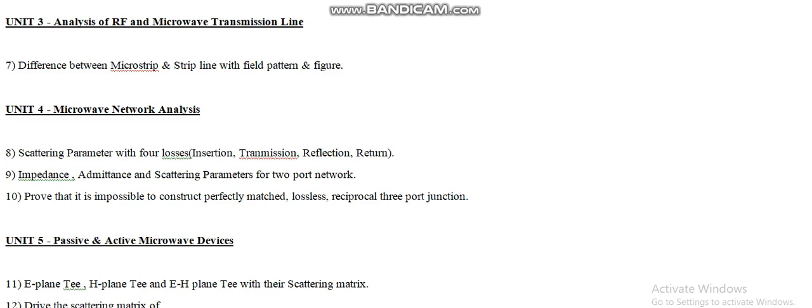Now let us have a look at unit number three, that is Analysis of RF and Microwave Transmission Lines. According to question number seven, the examiner can ask for the difference between microstrip and strip line on the basis of field pattern and figure. For two marks, the examiner asks only for the definition of strip line or microstrip line separately; but for four marks, we need to draw the field pattern and differentiate between microstrip and strip line on the basis of their figures.